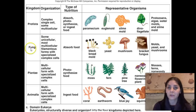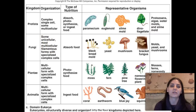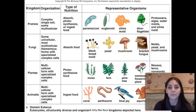The next kingdom within domain Eukarya is Fungi. Some are unicellular like yeasts, but most are multicellular. They are filamentous, meaning they have little hair-like projections formed by specialized cells. They absorb their food — remember, they're absorptive heterotrophs and cannot produce their own food. They also play a very important role in decomposing dead organisms. Examples include black bread mold, yeast, mushrooms, and bracket fungus.